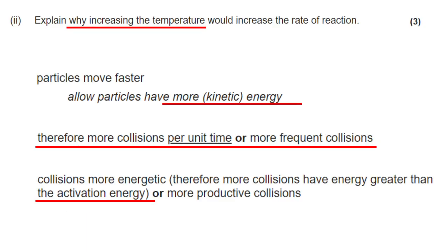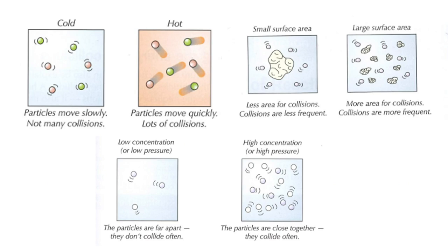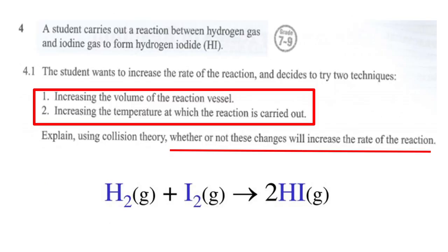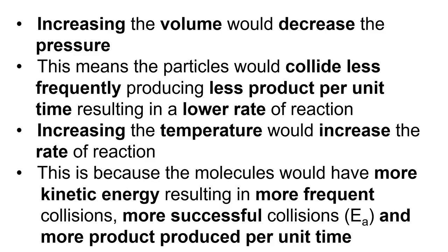Explain why increasing the temperature would increase the rate of reaction: particles will have more kinetic energy, there will be more collisions per unit time, and therefore more collisions with the activation energy — these are called successful collisions. Here's another example: a student wants to increase the rate of reaction of hydrogen and iodine to make hydrogen iodide. They're all gases. Increasing the volume of the reaction vessel is bad — it decreases pressure, meaning less product per unit time. Increasing the temperature is good — more kinetic energy, more product per unit time.